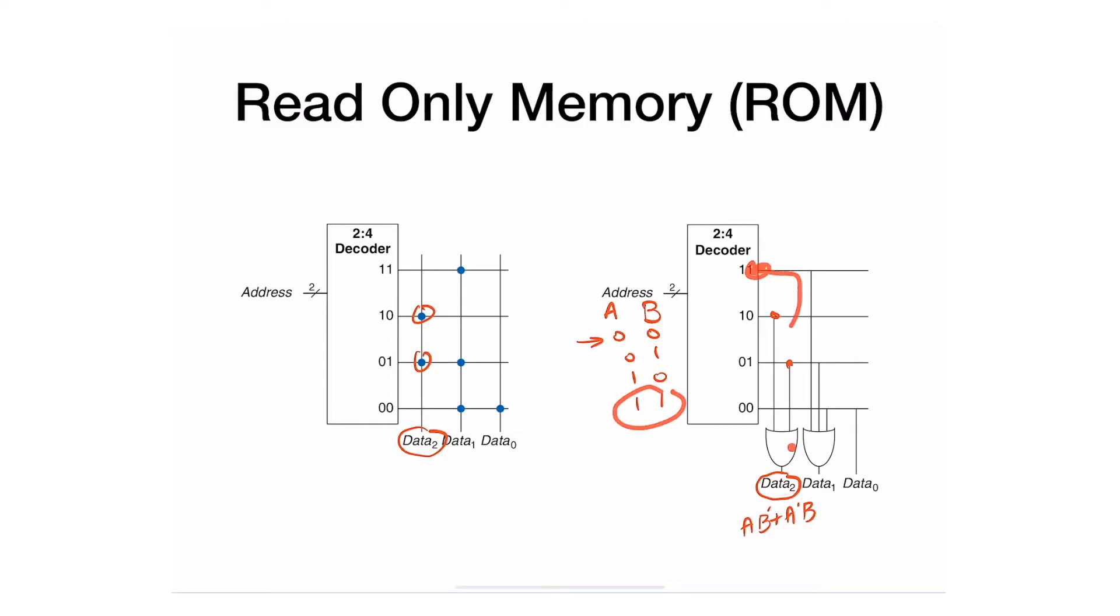Data two equals—you can see I was able to implement a combinational circuit. This particular decoder is generating the minterms—all the canonical minterms for A and B: A prime B prime, A prime B, A B prime, A B. I'm taking some of the minterms in sum of products form and implementing it. If you know your digital logic, this particular data two is an XOR—it's only asserted when A and B are different.